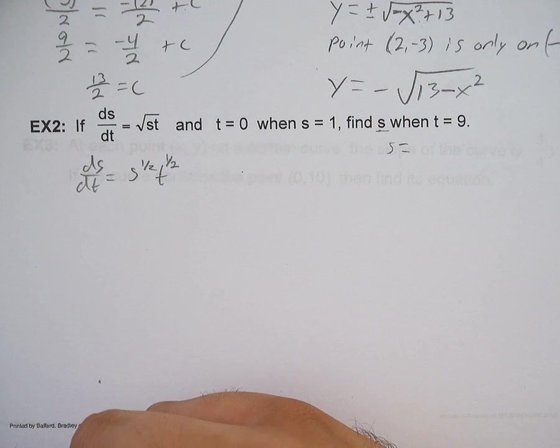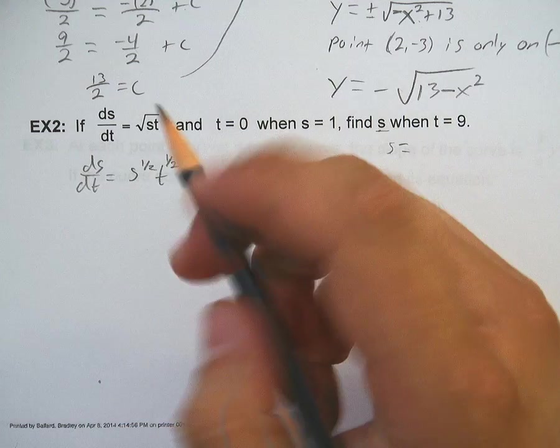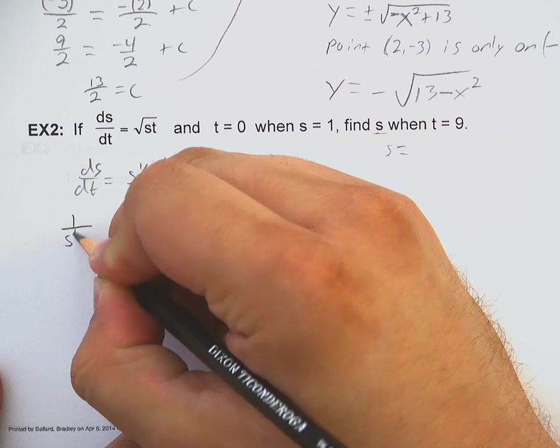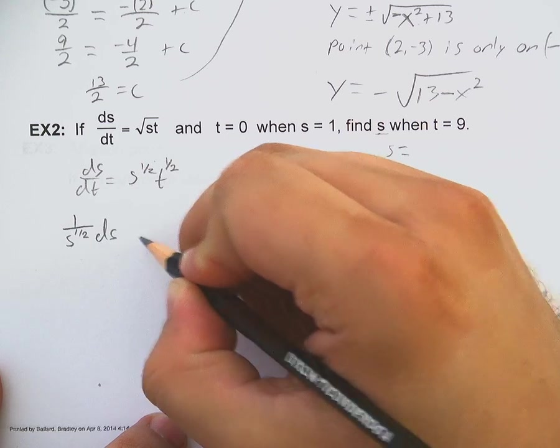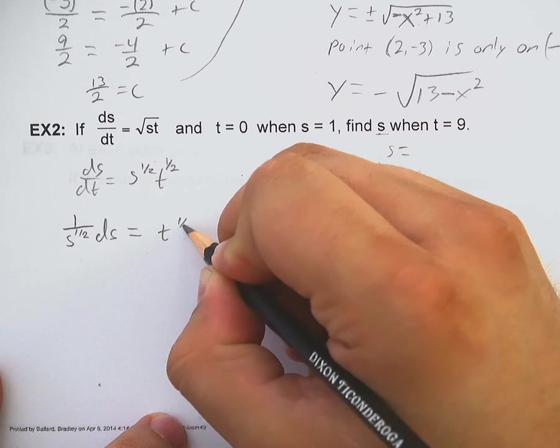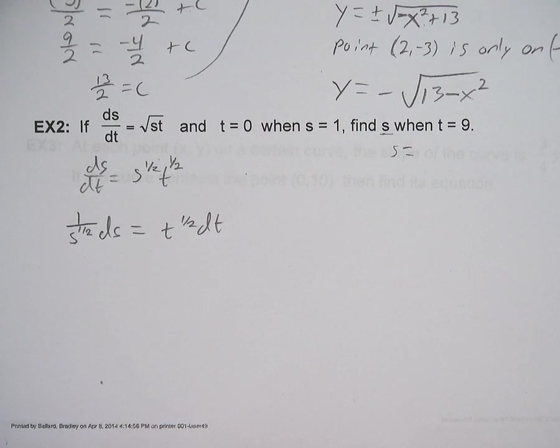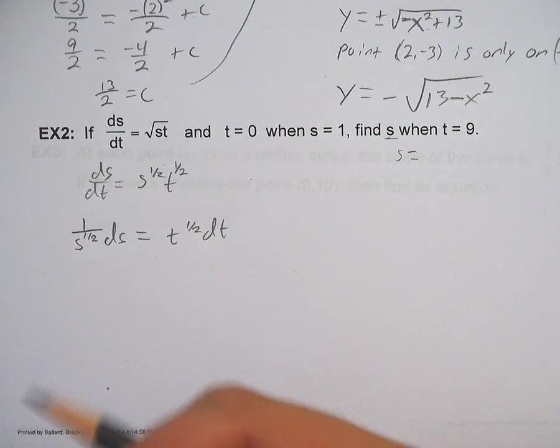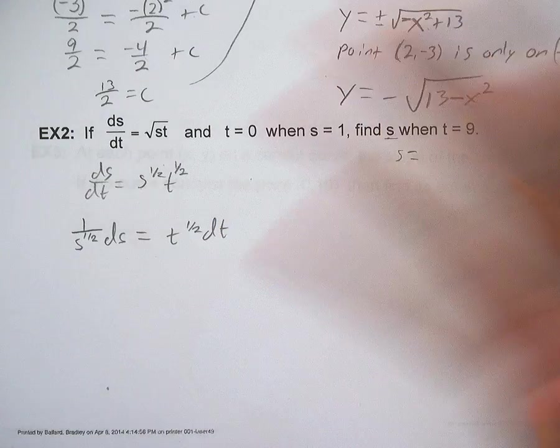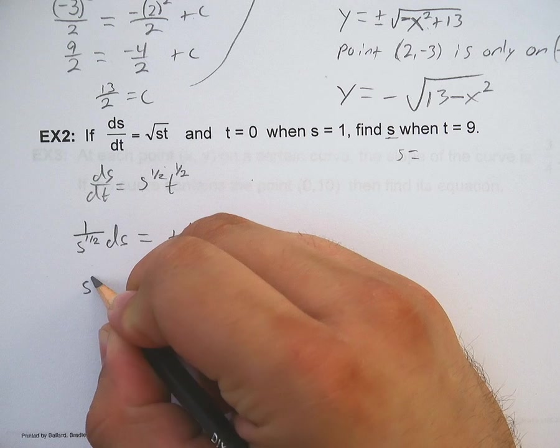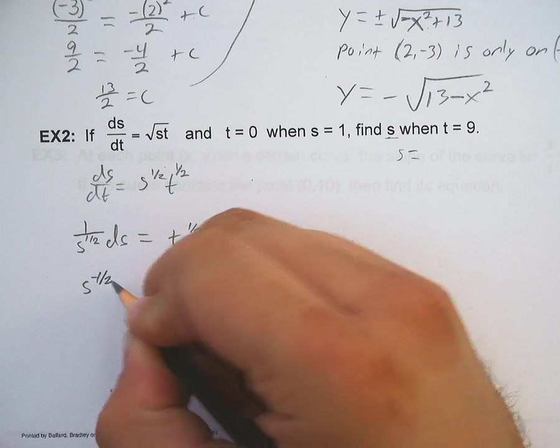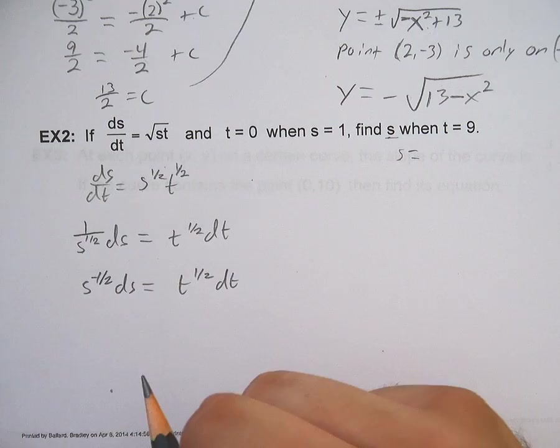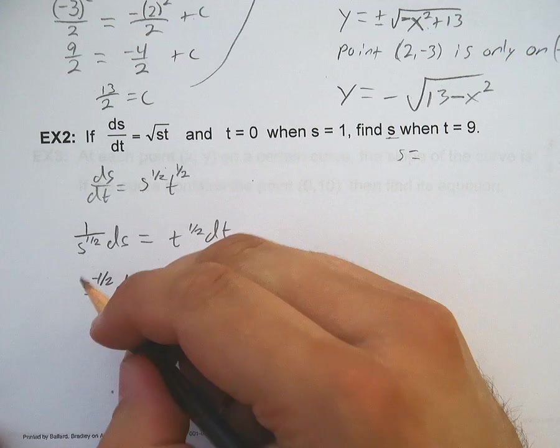And now I can separate variables. If you were to divide by s^(1/2) over here, you'd have 1 over s^(1/2) ds multiplied dt over here. That's t^(1/2) dt. But that 1 over s^(1/2), it's messy. I don't like it. I want it to be a whole number or at least a whole value. I don't want to deal with fractions. So I'm going to call this s^(-1/2) ds equals t^(1/2) dt. That way I don't have to worry with fractions.